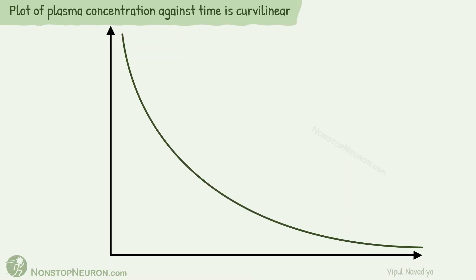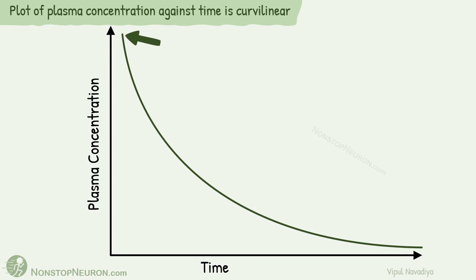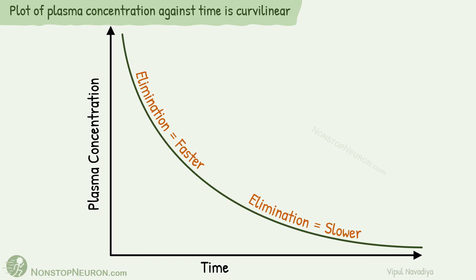Next point: the plot of plasma concentration against time is curvilinear. In this graph, the x-axis shows time and the y-axis shows plasma concentration of drug. The concentration is high at the beginning. At this high plasma concentration, elimination is faster, so initially the drop in plasma concentration with time is more. With decreasing concentration, elimination becomes slower, so the fall gradually becomes slower and slower. Because of this, the graph is curvilinear.